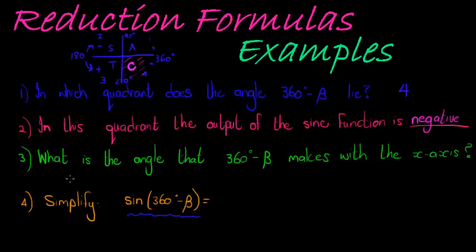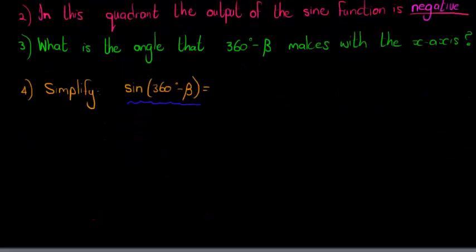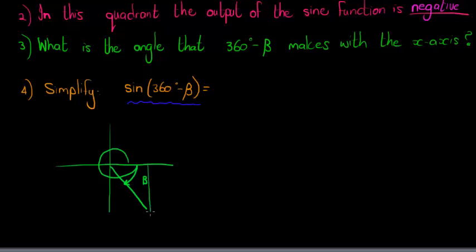The third and final question: what is the angle that we now make with the x-axis? If I were to just draw that again a little bit bigger here for you so that you can see, if I have 360 degrees is all the way there, minus beta means I am going in the clockwise direction, beta units, beta degrees. So what is the angle that we make with the x-axis? It's beta. Beta is the angle I make with the x-axis.